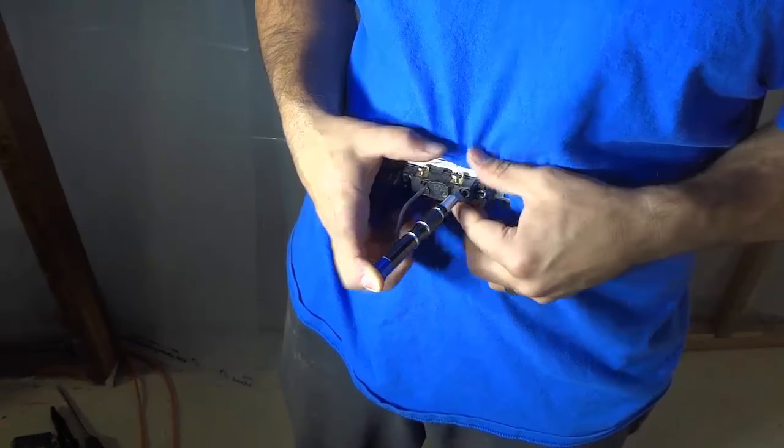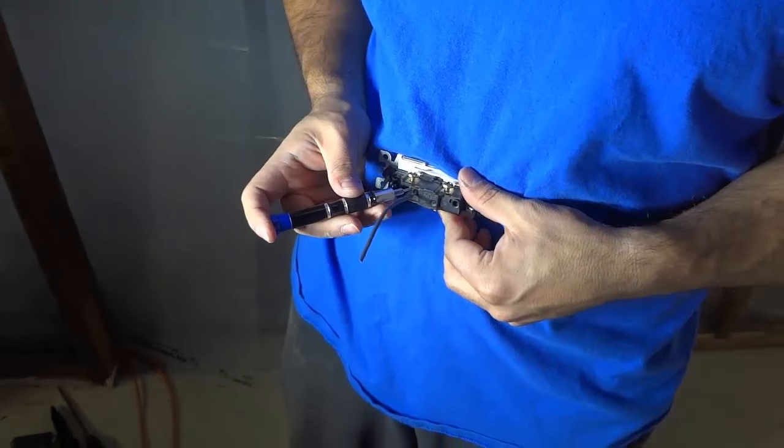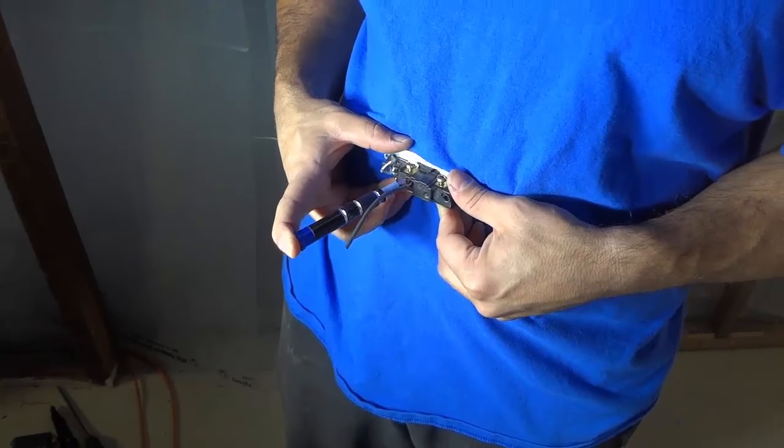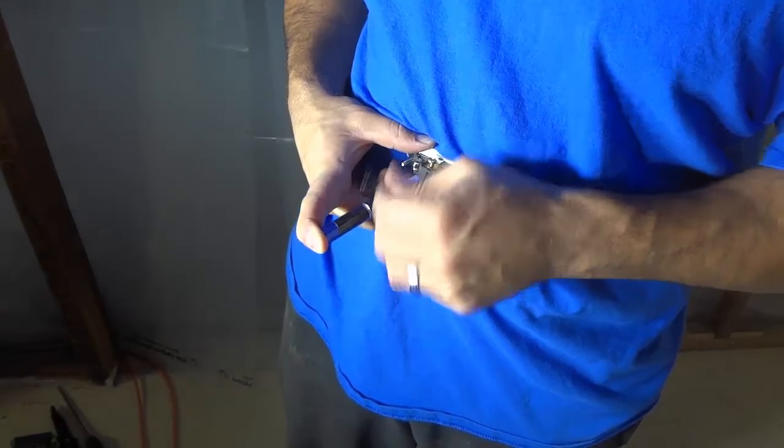I'm going to do the same thing over here. I'm going to take the small flathead screwdriver, press it down into the slot pressing nice and hard, and then I can just take the wiring and pull it out just like that.